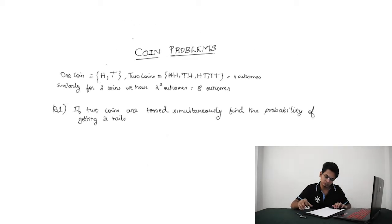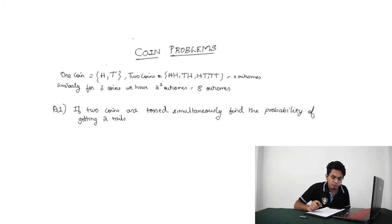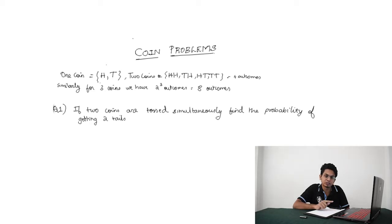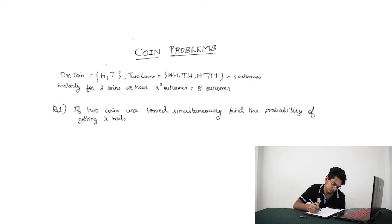Now let's discuss about some problems related to probability. The first case is coin problems. When you toss a coin there are only two outcomes, that is either head or tail. Tossing two coins, you have four outcomes — that is 2 to the power n outcomes. Tossing three coins, you have eight outcomes, that is 2 to the power 3, that is eight outcomes.